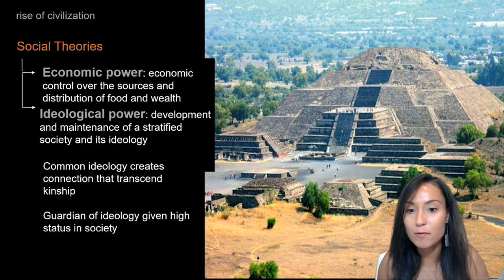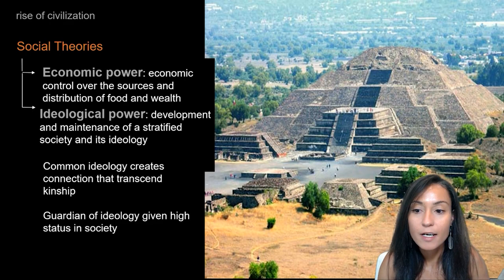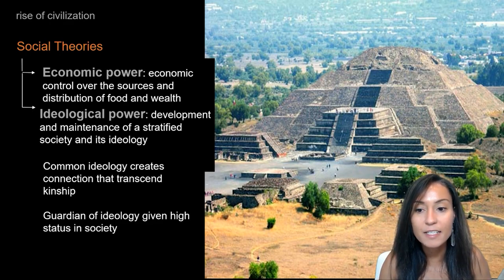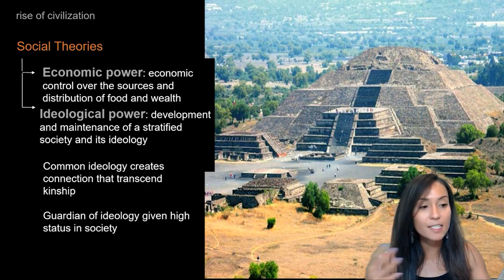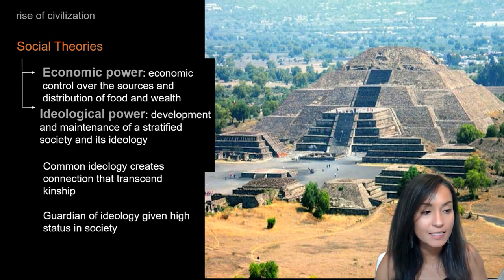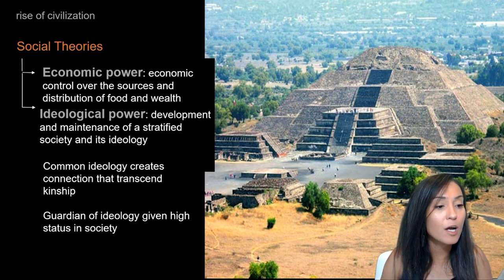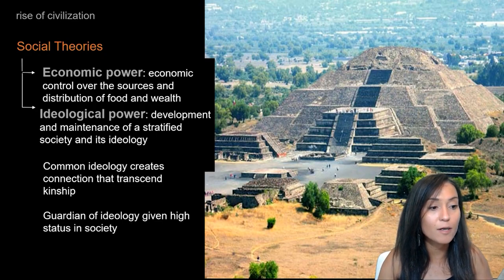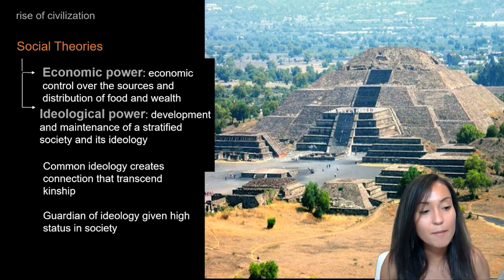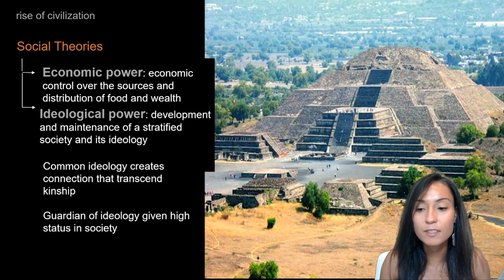In terms of ideological power, we want to think about the development and maintenance of a stratified society and its ideology. Ideological power comes from the creation and modification of certain shared cultural and political symbols. Common ideologies create important connections that transcend kinship — our direct genetic relationships — and the guardians of these ideologies were provided with high status in society. Think back to David Lewis-Williams' ideas about the shaman and how the shaman would control access to certain spaces as well as knowledge about the afterworld. One example is Teotihuacan in Mexico, which had a powerful priesthood and a set of religious institutions that created ornate public monuments.